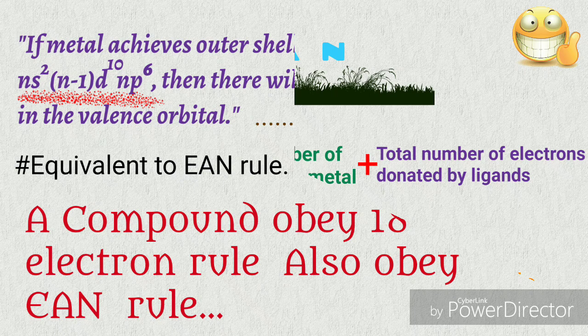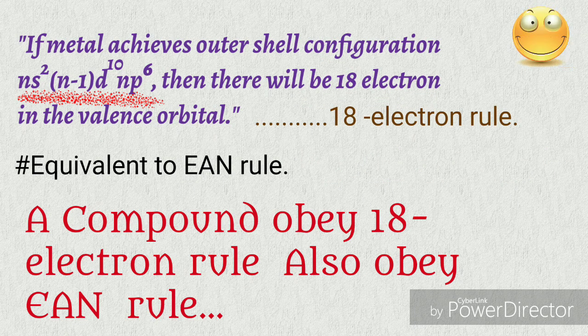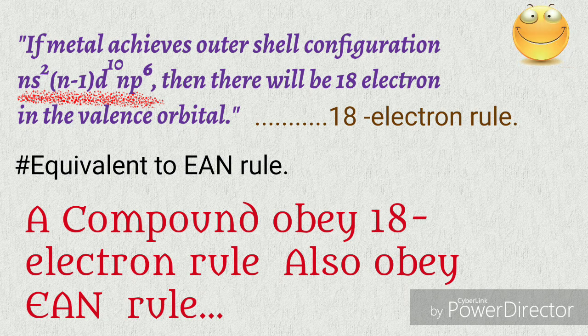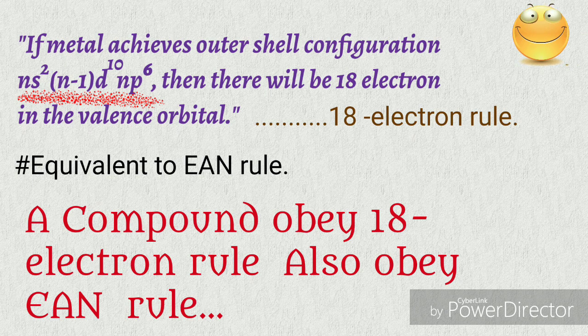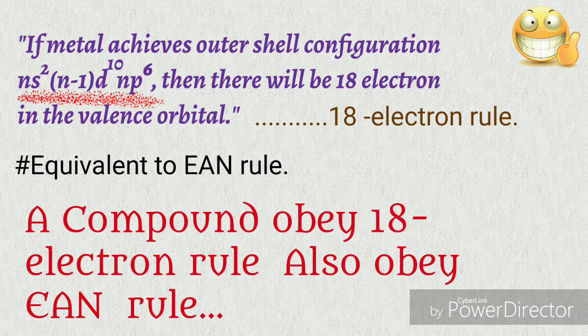If we simplify this, we get a more general statement: when the metal achieves an outer shell configuration of ns² (n-1)d¹⁰ np⁶, then there will be 18 electrons on the valence orbitals of the metal, which is stable. This rule is called the 18 electron rule. This is equivalent to EAN rule because every noble element has the same outer shell electronic configuration.